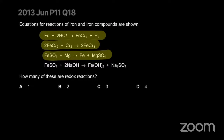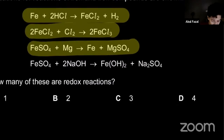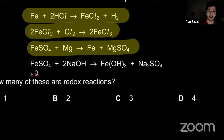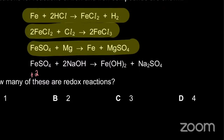Now let's take a look at the last one. Iron's oxidation state here — iron is plus two. How do I know it's plus two? Someone can tell me.